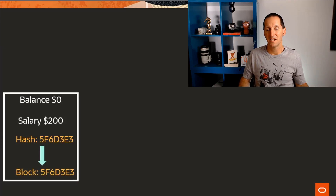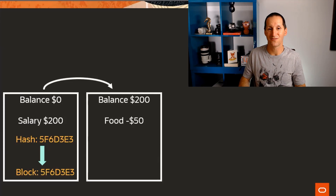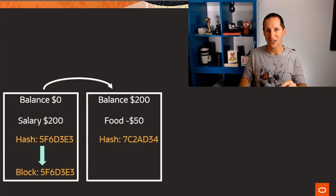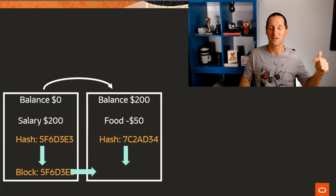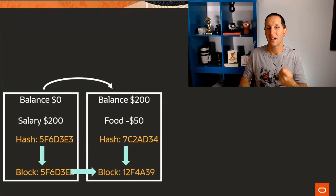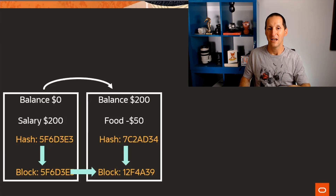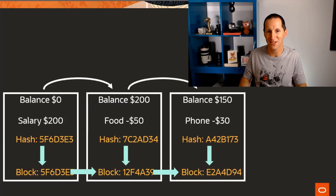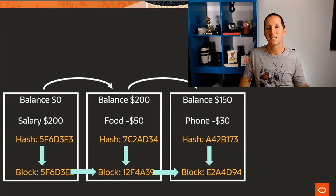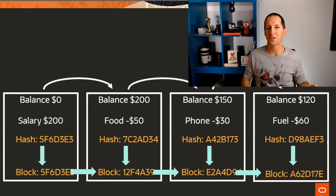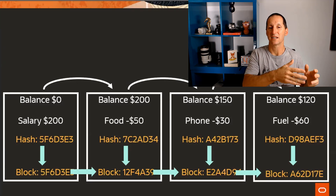My next transaction: I'm going to buy food so I don't starve. Balance is 200, I spend 50 on food. I hash that transaction, combine it with the hash of the previous block to come up with a brand new hash, linking the two together. Then the next transaction is my 30-dollar phone bill — balance drops from 150 to 120, hash the transaction, hash the previous block, and so forth. I have this chain of blocks — hence blockchain — where hash functions link each block to the previous one.